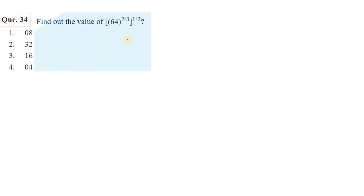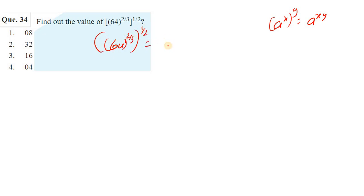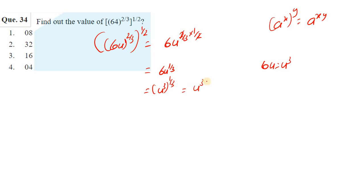Find the value of 64^(2/3) whole power 1/2. Using the rule (a^x)^y = a^(x×y): 64^(2/3 × 1/2) = 64^(1/3). Since 64 = 4³, we get 4³^(1/3) = 4. The answer is 4.